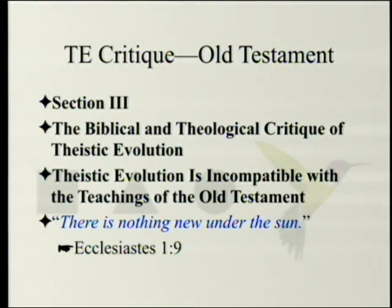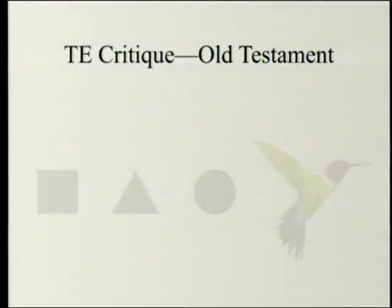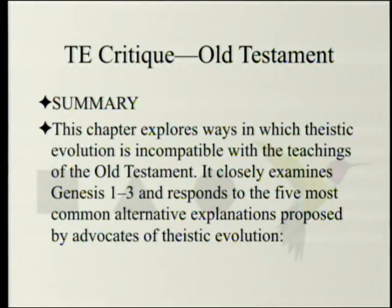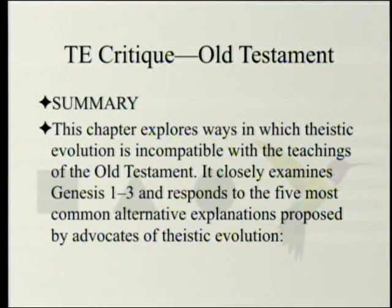The chapter starts with an epigram: 'There is nothing new under the sun.' As a summary, this chapter explores ways in which theistic evolution is incompatible with the teachings of the Old Testament. It closely examines Genesis 1-3 in response to the five most common alternative explanations proposed by advocates of theistic evolution.